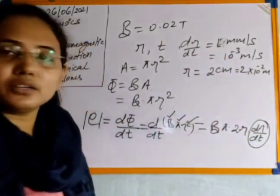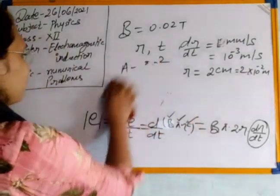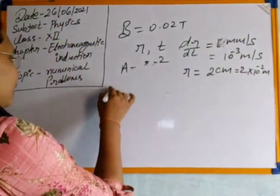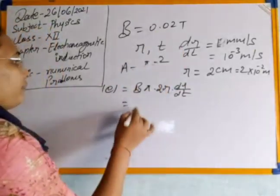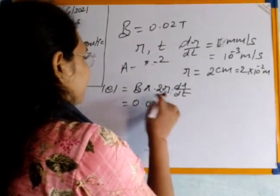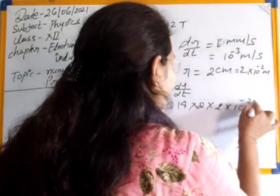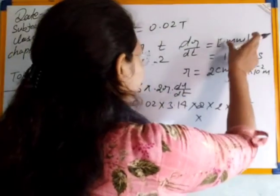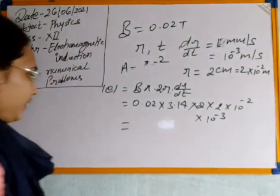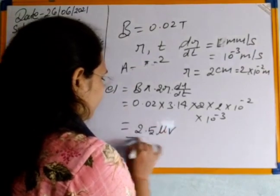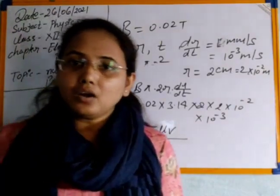Now we can put all values in the induced EMF formula: EMF = Bπ × 2r × (dr/dt). The value of B = 0.02, π = 3.14, r = 2 × 10⁻² m, and dr/dt = 10⁻³ m/s. Solving all these values, the final answer is 2.5 microvolt. This is the induced EMF produced due to the change in area of the coil.